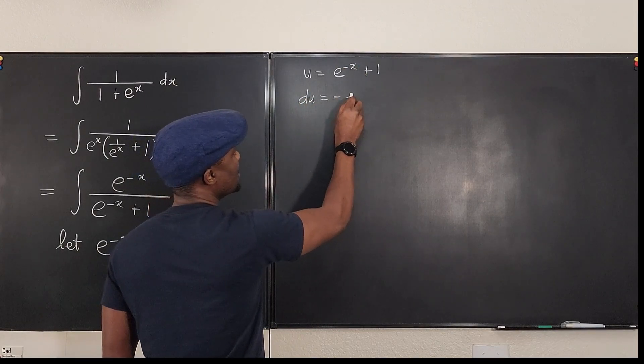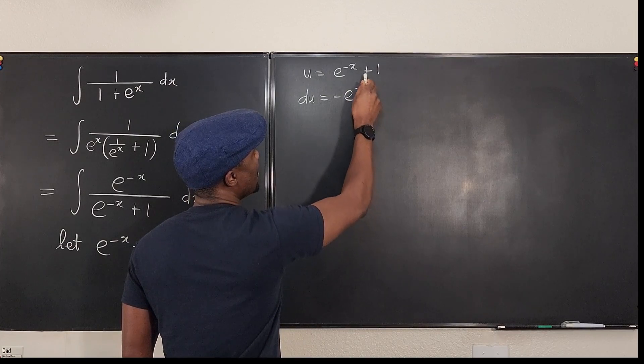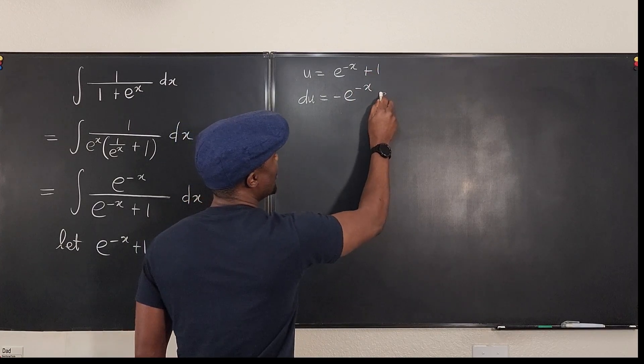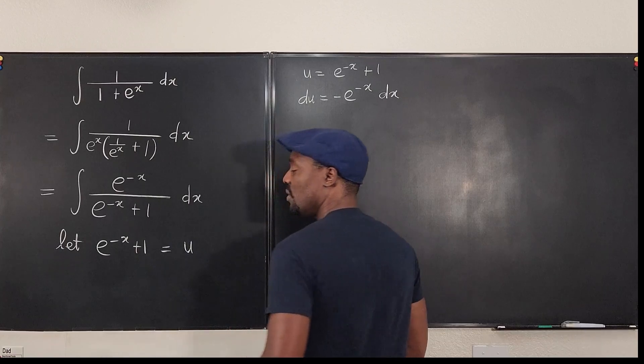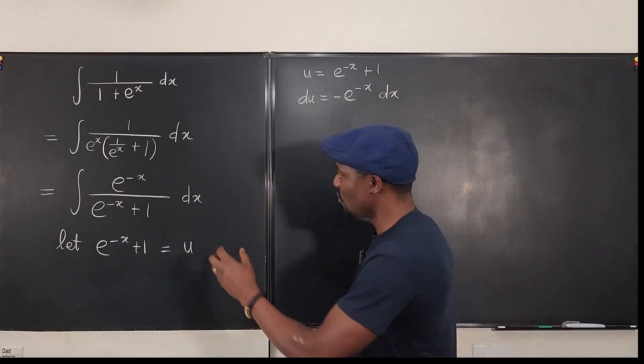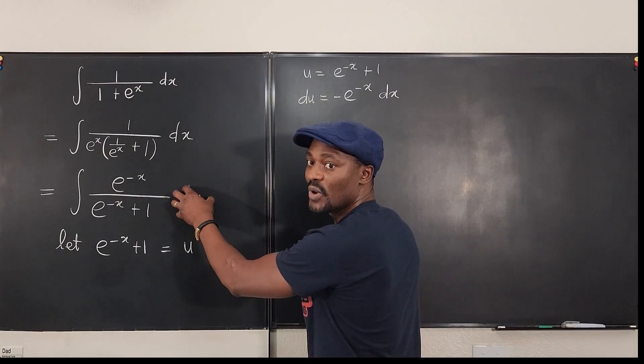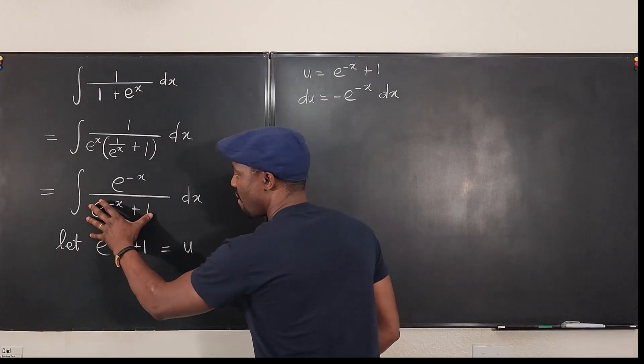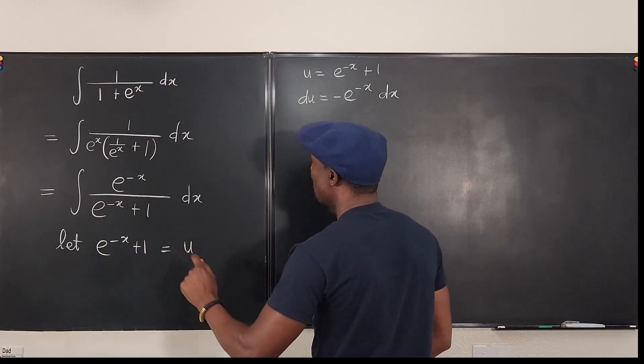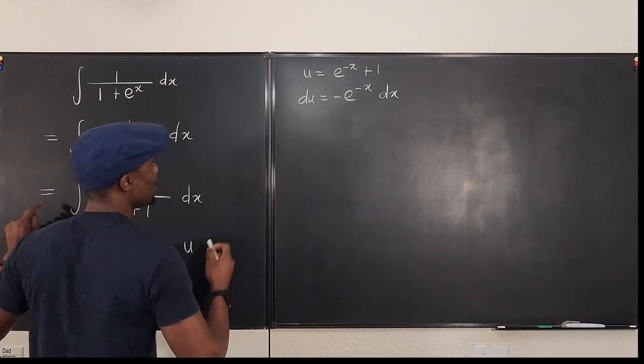So I have u equals e to the minus x plus 1 so that du will be equal to, if I differentiate this, it's going to be minus e to the minus x. Well, this becomes 0 and I'm going to have dx. And remember, the purpose of u-substitution is to replace dx with du and replace whatever expression you have with u.